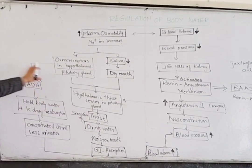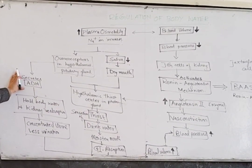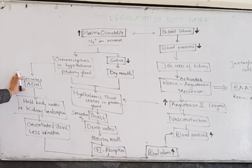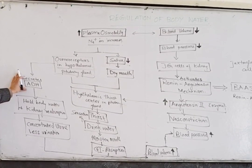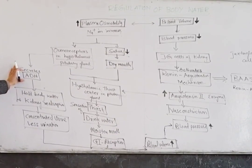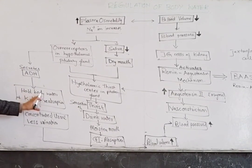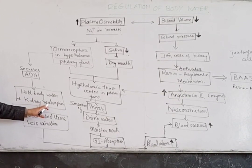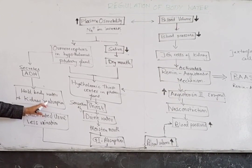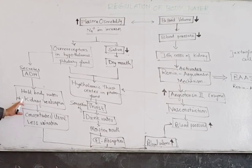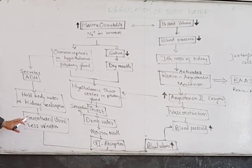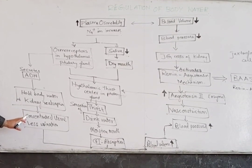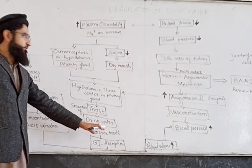It is also important in the secretion of ADH, which is anti-diuretic hormone. Anti-diuretic hormone holds body water by increasing renal reabsorption. When renal reabsorption occurs, concentrated urine with less urination occurs, which holds body water.